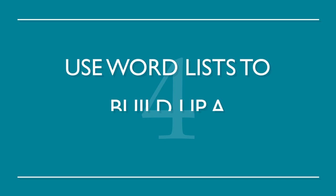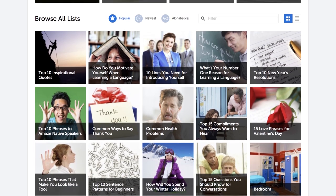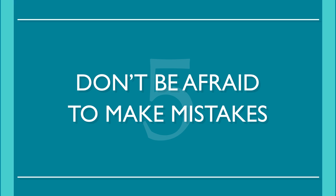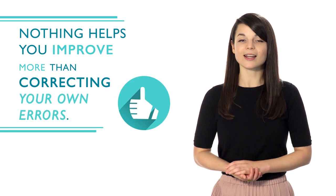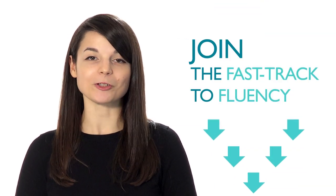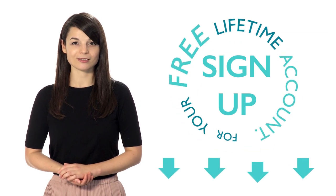Number four: use word lists to build up a solid vocabulary. This is a great way to build up your fluency one word at a time. We have all the word lists you need, with a range of topics from food to love. Number five: don't be afraid to make mistakes. Nothing helps you improve more than correcting your own errors — you're more likely to remember it correctly the next time around. Everyone makes mistakes, so don't be afraid to learn from them. There's no magical way to learn a new language overnight, but doing all of these can really help. Sign up for your free lifetime account — no credit card required — and start learning now.